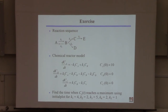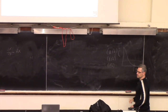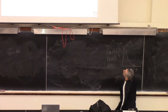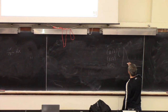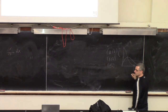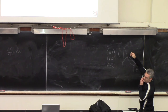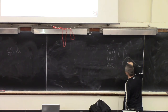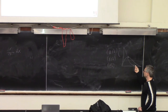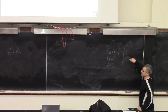I expect A to start at 10 and go down as a reactant being depleted. I expect C to go up initially — as it's produced — and then come back down as the rate of consumption exceeds production. If you were running this as a batch reactor, you'd want to stop the reactor at the maximum C concentration to get as much C as possible.